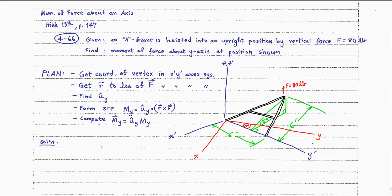We're then trying to find that moment about the red y-axis. Notice that you also have a blue y-prime axis. The blue represents the x-prime, y-prime, z-prime axis system, and the red represents the x, y, and z axis system.